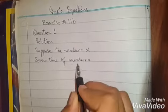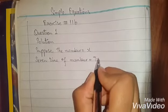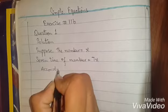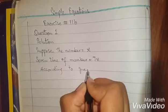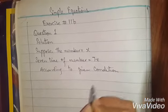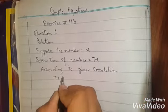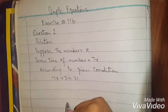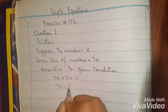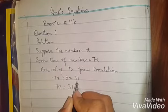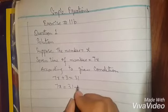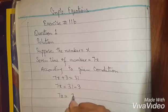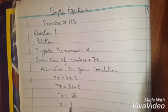Suppose the number is x. Seven times the number is 7x. According to the given condition, three is added, so we have 7x plus 3 equals 31. Moving 3 to the right side gives a minus sign, so 7x equals 31 minus 3, which gives us 7x equals 28.